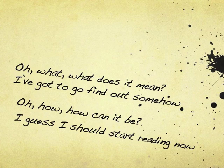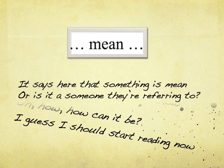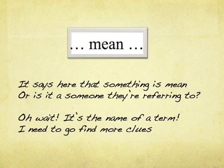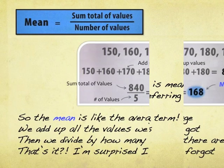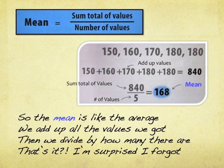I guess I should start reading now. It says here that something is mean — or is it a someone they're referring to? Oh wait, it's the name of a term. I need to go find more clues. So the mean is like the average — we add up all the values we got, then we divide by how many there are.